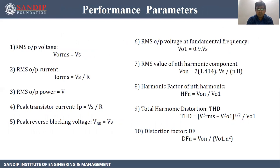Performance parameters: First, RMS output voltage V0_rms = Vs. Second, RMS output current I0_rms = Vs / R. Third, RMS output power = Vs² / R. Fourth, peak transistor current Ip = Vs / R. Fifth, peak reverse blocking voltage VBR = Vs. Sixth, RMS output voltage at fundamental frequency V01 = 0.9 × Vs. Seventh, RMS value of the nth harmonic component V0N = (2 × 1.414 × Vs) / (N × π).